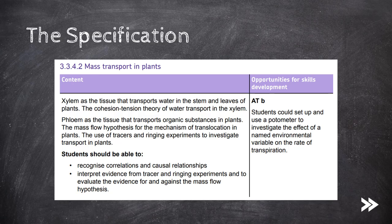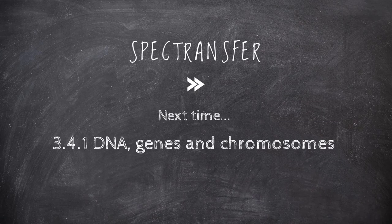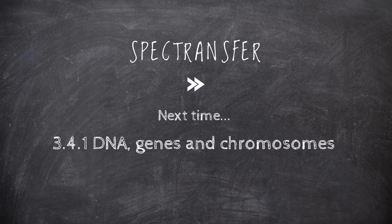So we've had a look at the xylem and the cohesion tension theory, as well as the phloem and the mass flow hypothesis. We've also looked at tracers and ringing experiments, as well as some evidence against the mass flow hypothesis. Thanks for watching. If you have any ideas or suggestions, post them below. Next time we'll be moving on to a new unit, section 3.4, which covers genetic information, variation and relationships between organisms.